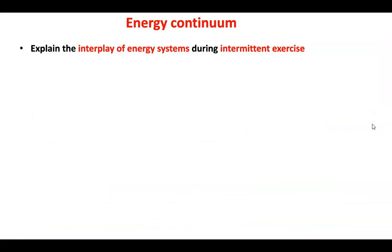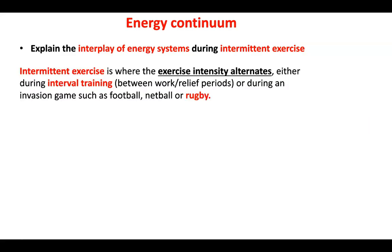Intermittent exercise is where the intensity alternates — either during interval training between work and relief intervals, or during a game with breaks of play or changes in intensity. Examples include rugby, football, and hockey. In an exam you may be asked to give a team game of your choice and explain the intermittent exercise in terms of exercise intensity and energy system contribution.